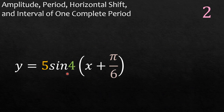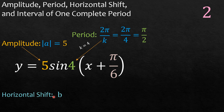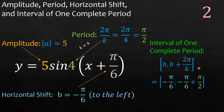Next: y is equal to 5 sine 4 times x plus pi over 6. The amplitude is 5, and the period is 2 pi over k where k is 4, so 2 pi over 4 is pi over 2. The horizontal shift: we see this is positive, meaning b is negative pi over 6, and that is shifting the graph to the left. The interval of one complete period: b is negative pi over 6, plus the period pi over 2, gives the interval from negative pi over 6 to pi over 3.